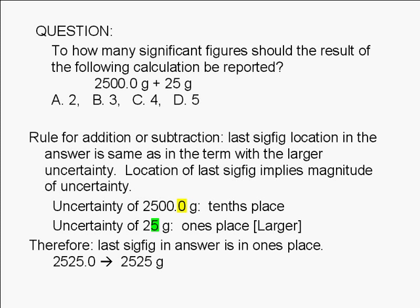Since the ones place is larger than the tenths place, the last significant figure in the answer should be in the ones place. The answer should be reported as 2,525 grams. There are 4 significant figures in the answer: 2, 5, 2, and 5. The correct answer is 4.